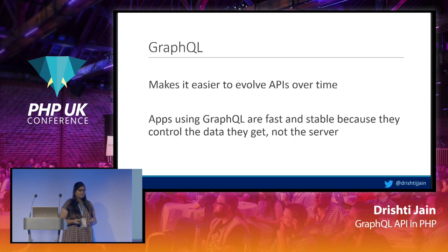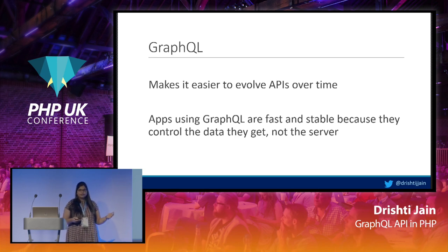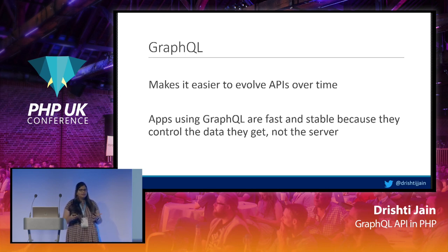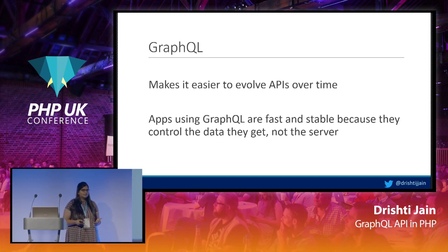GraphQL also makes it easier to evolve APIs over time. Business requirements of an application may change, but we need to support both existing and new structures. GraphQL has a great way of handling deprecated fields, making it easy to maintain your application over time. Apps built with GraphQL are fast and stable because they control the data they get, not the servers.